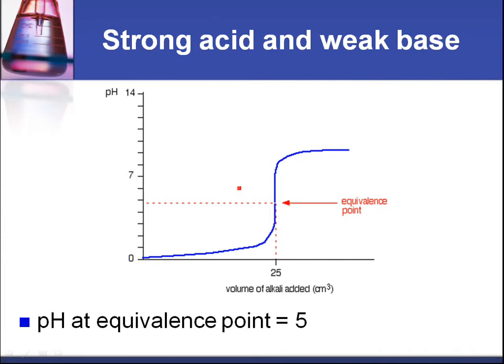Next is the strong acid and the weak base. So we start off with a low pH because we're talking about a strong acid. And again, the pH increases gradually until we get the point of inflection. Now, the equivalence point is below seven, less than seven. We could say that's around pH five. So the pH at equivalence point is around five. And then it levels off at around, what's that pH, between pH eight and nine because obviously we have a weak base.